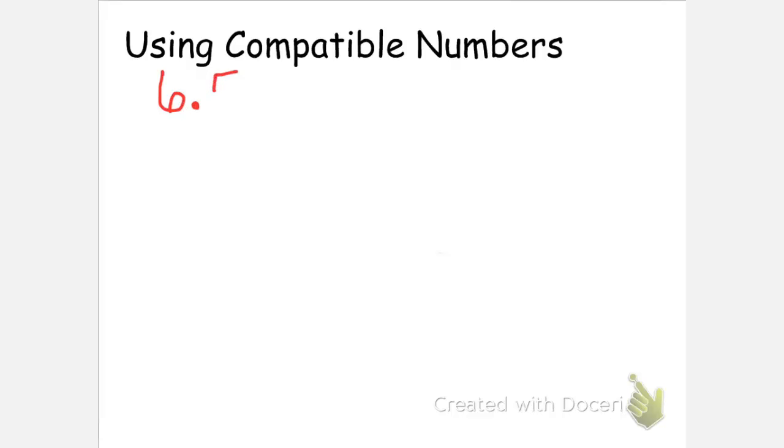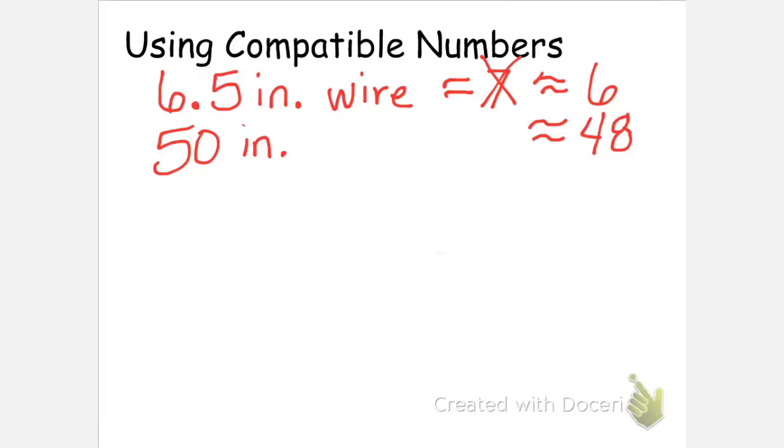As a final example of using compatible numbers when dividing, if I'm doing some sort of craft project that requires 6.5 inches of wire, and I have a spool of wire that contains 50 inches of wire, normally I would round the 6.5 either down to 6 or up to 7. Traditionally up to 7. But in this case, again, 50 doesn't divide evenly by 7. But I noticed that 6.5 could be rounded down to 6. And then if I change the 50 inches to 48 inches, which I definitely wouldn't do if I was rounding, then I have a division problem that's nice and easy. 48 divided by 6 is 8. And so I can make about 8 of these projects that require the wire.